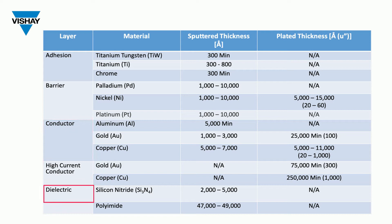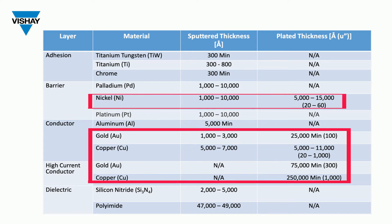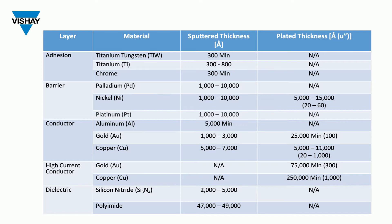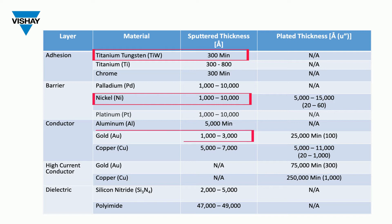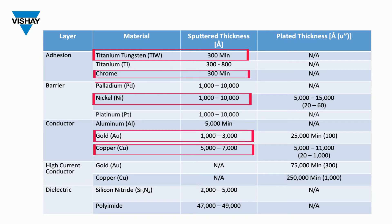The plated metal options SDF offers are copper, nickel, and gold. The sputtered metal options SDF offers are titanium tungsten, titanium tungsten 90-10, nickel, gold, nickel palladium gold, chrome, copper, palladium, and platinum.